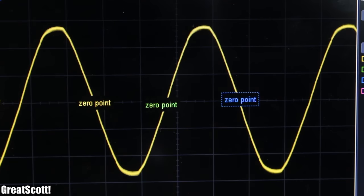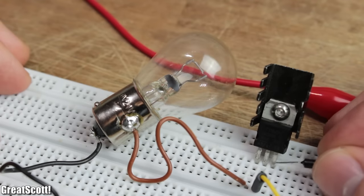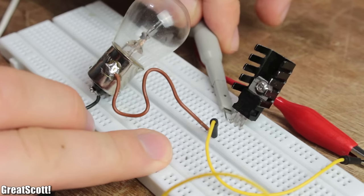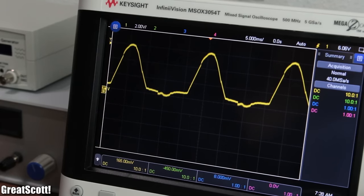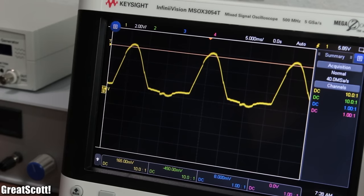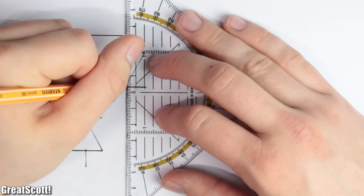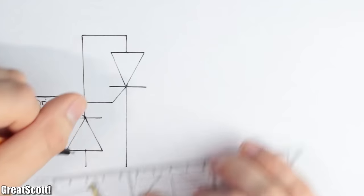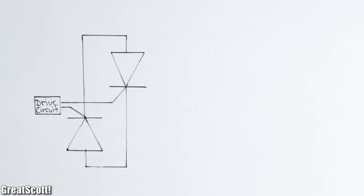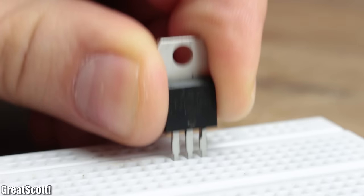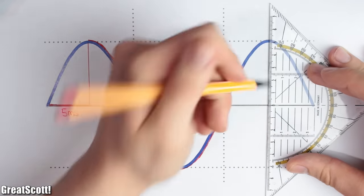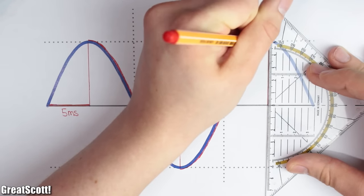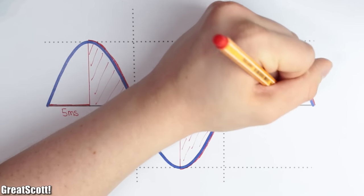Firstly, since there are now zero points, the thyristor turns off automatically after every half-wave. And secondly, since this is basically a half-wave rectifier, we cannot control and even eliminate the negative half-waves. In order to solve this we would need two thyristors in an inverse parallel configuration. And of course such a pre-made component does exist, the so-called triac.